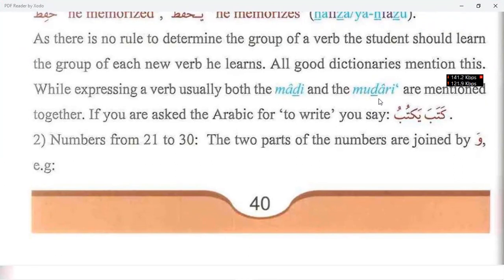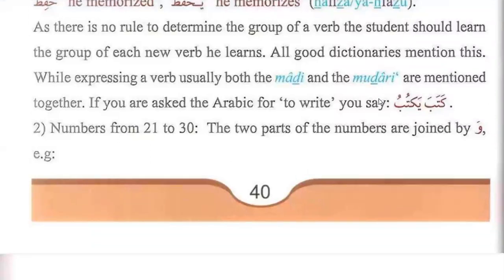Now counting from 11 to 20, masculine, with an example noun: ahada ashara taliban — eleven students; ithna ashara taliban — twelve students; salasata ashara taliban — thirteen students; arba'ata ashara taliban — fourteen students; khamsata ashara taliban — fifteen students; sittata ashara taliban — sixteen students; sab'ata ashara taliban — seventeen students; samaniyata ashara taliban — eighteen students.